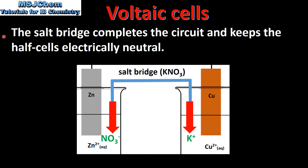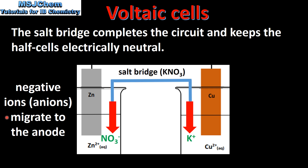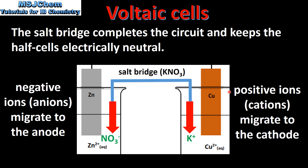Next we look at the function of the salt bridge. The salt bridge completes the circuit and keeps the half cells electrically neutral. Negative ions migrate from the salt bridge to the anode, and positive ions migrate from the salt bridge to the cathode. This salt bridge is made of potassium nitrate. The electrolyte in the salt bridge is chosen so that it doesn't interfere with the reactions that take place in the half cells. The negative nitrate ions migrate from the salt bridge to the anode, and the positive potassium ions migrate from the salt bridge to the cathode, keeping the half cells electrically neutral.